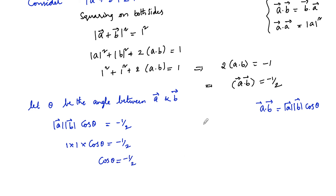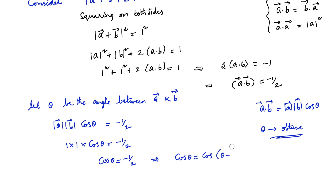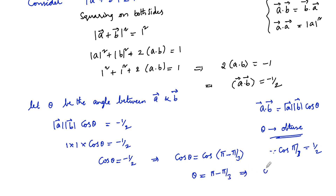This indicates that theta is an obtuse angle since cosine is negative. So we consider theta in the second quadrant. Since cos(π/3) is 1/2, but it is an obtuse angle, we take pi minus pi by 3. Therefore theta is equal to pi minus pi by 3, so the angle between the two vectors is 2π/3.